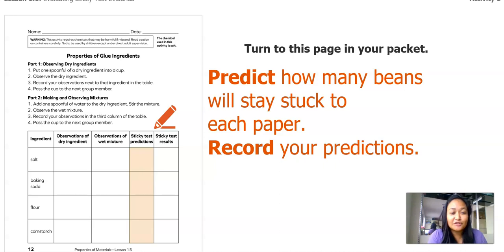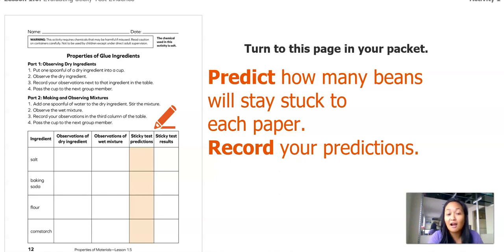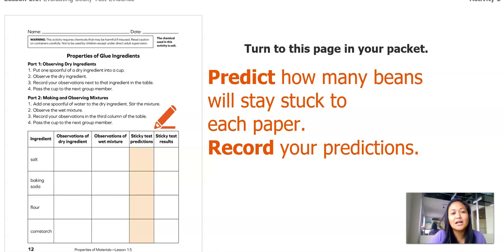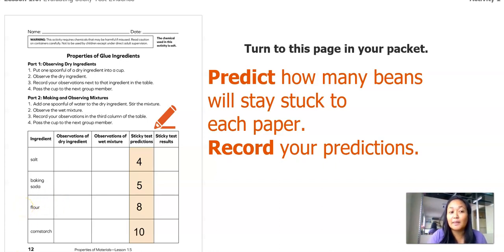You might remember this worksheet from your previous lesson when you observed the dry ingredients and the wet mixture. So today we're going to focus on the third column about our sticky test predictions. I want you to think: when we shake each mixture, how many beans will be left stuck on each paper? I want you to record your predictions. Maybe you could use a separate sheet of paper if you don't have this page in your packet. Remember, there's 10 beans for each mixture. So how many do you think will stay stuck on each paper? I'm going to share my predictions. I think there will be four left on the salt, five for the baking soda, flour will have eight, and cornstarch will have all 10. Did you predict something similar or something different?